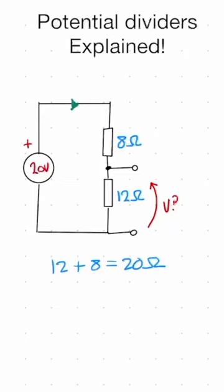The next step is to calculate the current flowing around the loop. That's going to be equal to 20 volts divided by the sum of our resistances, 20 ohms, which gives us a current equal to 1 amp.